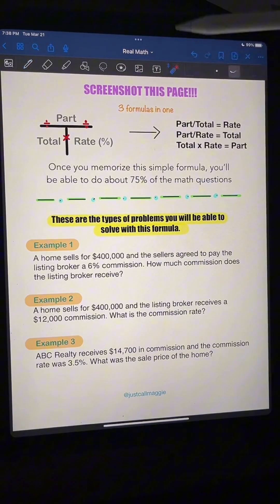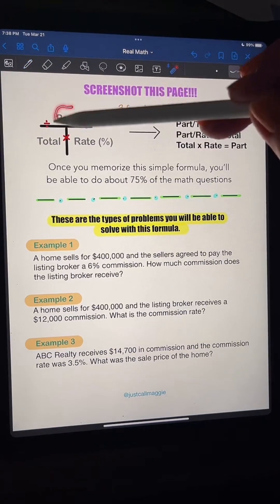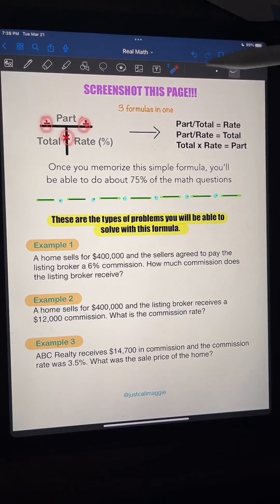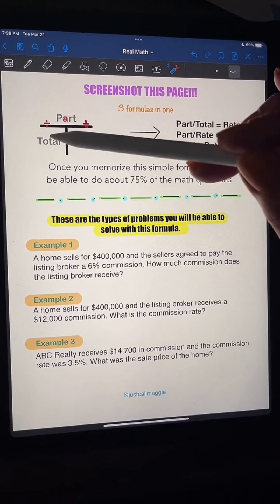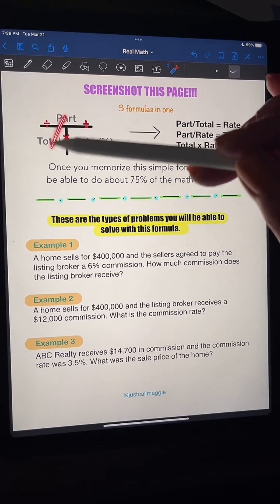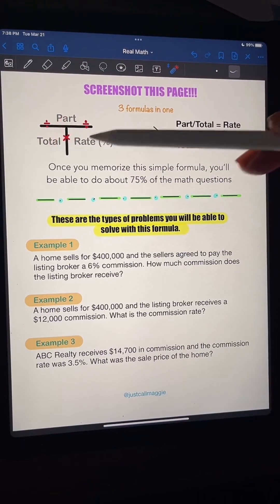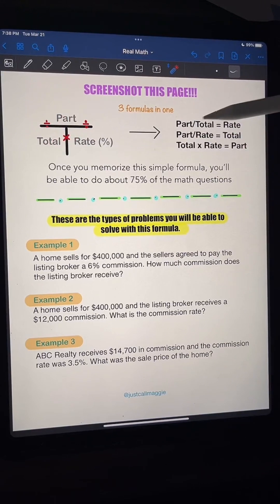So we have here a part, and then we have a divide sign, right? Two divide signs and a multiplication. So anytime you have a part and a total, you're going to divide, and then that's going to equal the rate. See? Part divided by total equals rate.